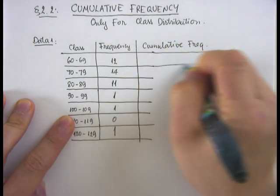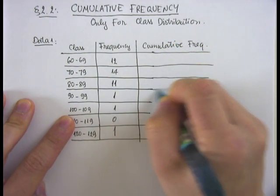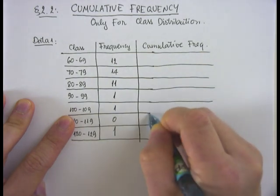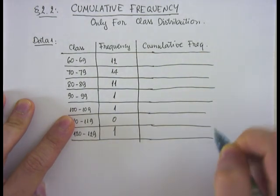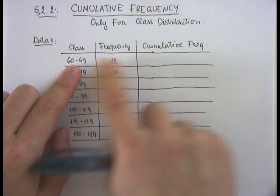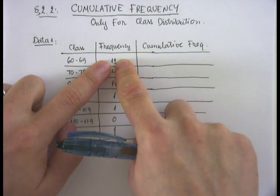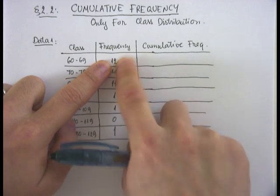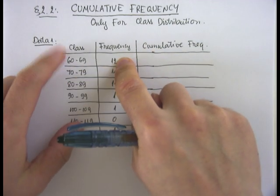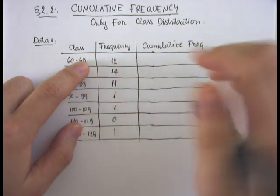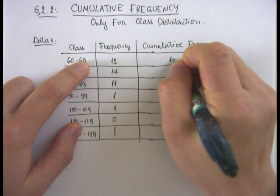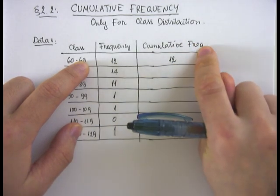Looking at the first class, the frequency for that class is 12, meaning there are 12 members in that class. There isn't any other class below this class, so the cumulative frequency would be 12.